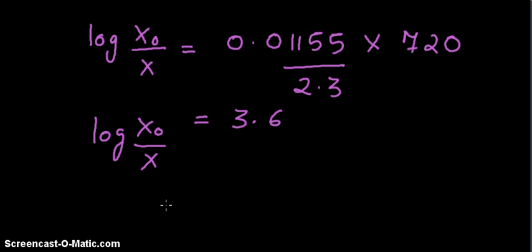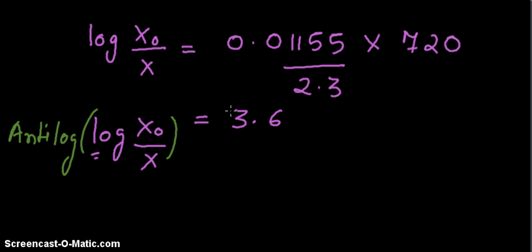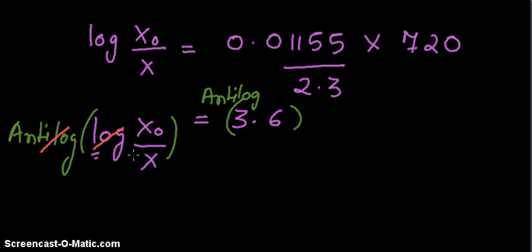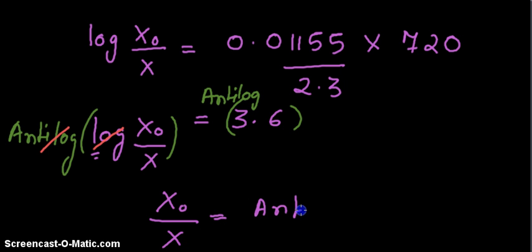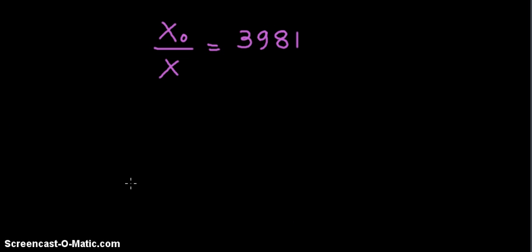Now let us simplify this by nullifying the log. In order to nullify the log, we have to take the antilog of both sides. The antilog of the left side cancels the log, and we get: x₀/x is equal to antilog of 3.6. The antilog value of 3.6 comes to 3981.